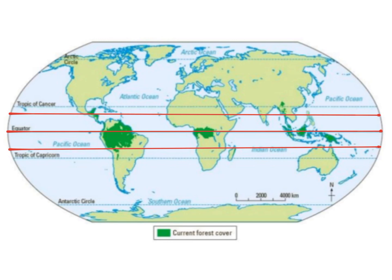At the equator, we receive the most solar insolation because of the curvature of the Earth. This means that per square metre, the equator receives the greatest amount of solar radiation. Because it is warm at the equator, it causes the ground to heat up. As the ground heats up, it warms the air above it. As the air warms, it becomes less dense, and it starts to rise.